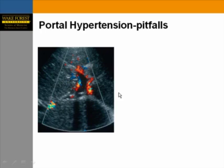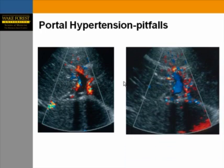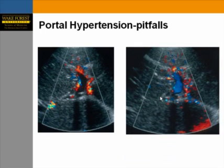Another patient with portal hypertension and cirrhosis: initially interrogated with a very high scale showing no evidence of flow, leading to an impression of complete occlusion of the left portal vein. Improving sensitivity demonstrates flow in the portal vein — but it is reversed. So this is portal hypertension, not portal vein thrombosis.